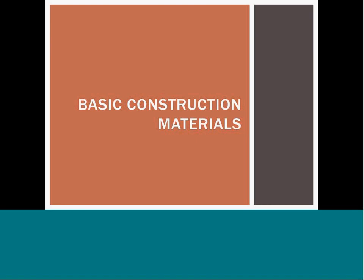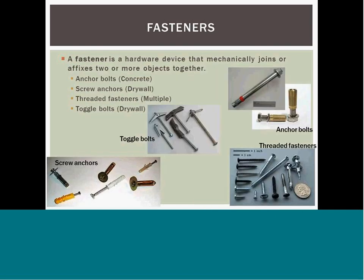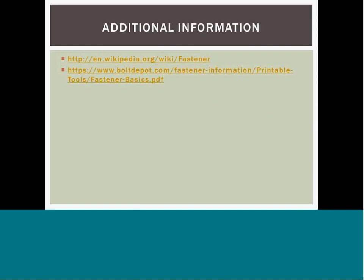The next topic covers basic construction materials. Walls are framed with wall studs, and drywall is then attached to the studs with fasteners. Hanging drywall horizontally provides benefits like concealing joints and accommodating inconsistencies in the studs. Tape is used to conceal joints, and drywall mud is applied to provide a smooth final finish on the drywall before primer and paint is applied to give the wall its aesthetic final finish. Fasteners have a multitude of options, including angles, toggles, screws, and threaded fasteners, and there are many specialized fasteners you may want to familiarize yourself with before the test.